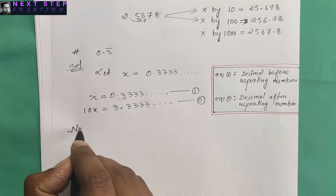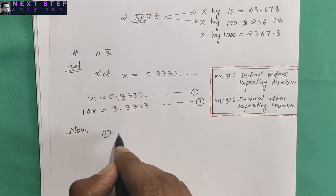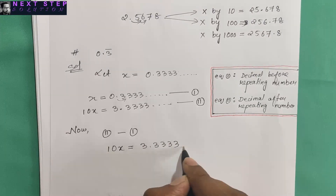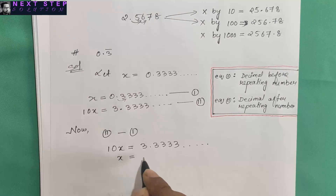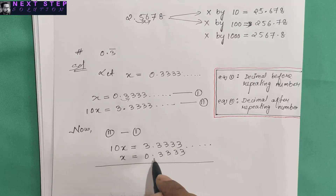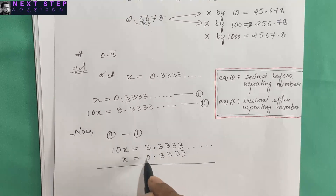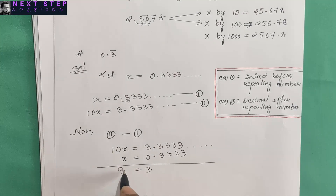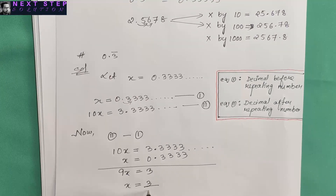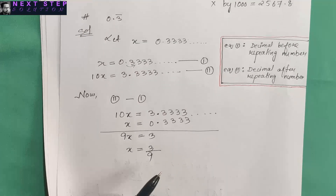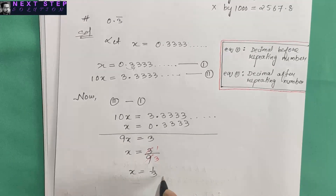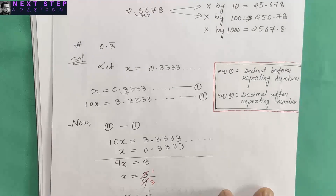Now subtract equation one from equation two. Ten x minus x gives 9x, and 3.3333 minus 0.3333 gives 3, since the repeating parts cancel. So 9x equals 3, meaning x equals 3 by 9. Both are divisible by 3, so x equals 1 by 3. This is the answer in the form of p by q.